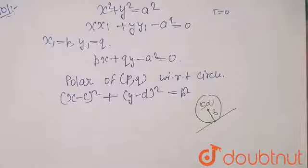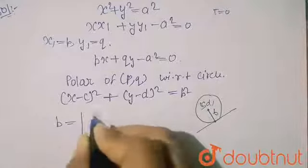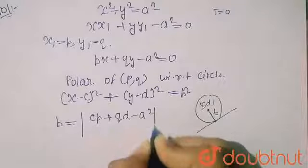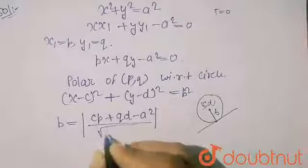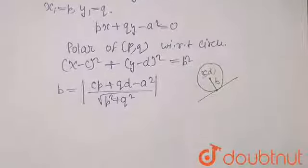So here the distance will be what? I have to find the distance. So the distance will be CP + QD - A² upon root P² + Q². This is my perpendicular distance.